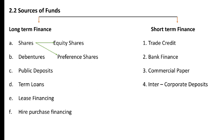There are several sources of raising long-term funds. First, equity shares — also called ordinary shares. The holders of these shares are called shareholders and are the legal owners of the company. They are a source of permanent capital as they have no maturity period. Second is preference shares, which are considered a hybrid security as they have features of both ordinary shares and debentures.